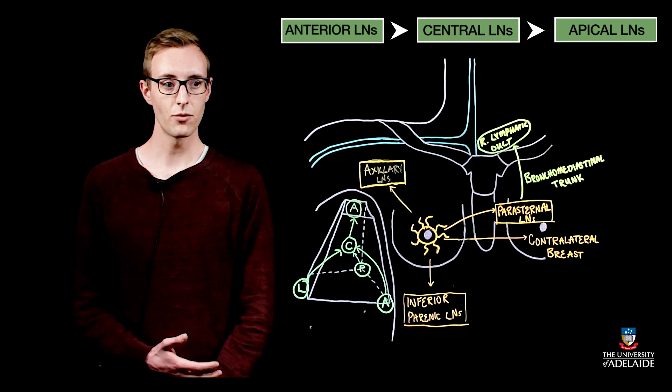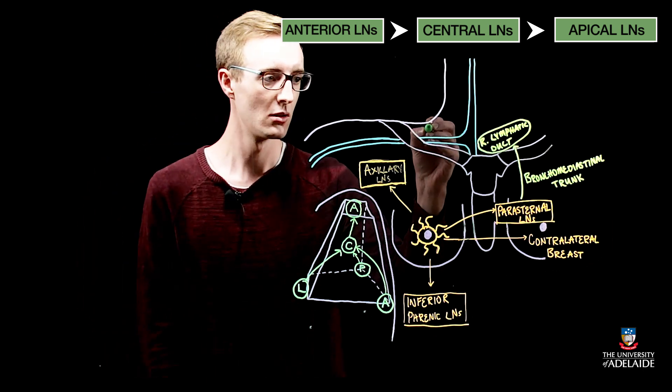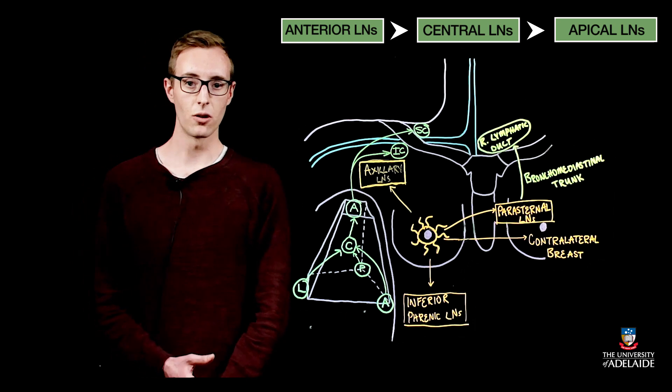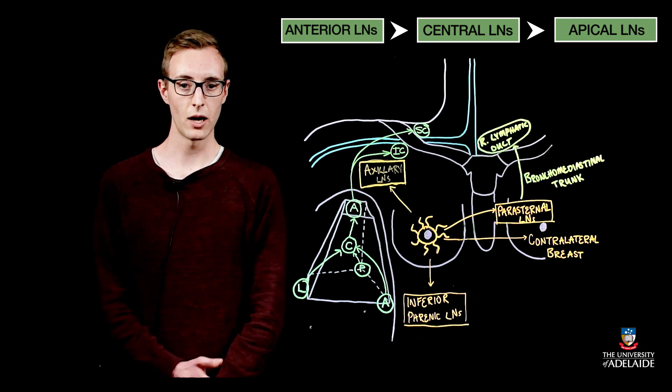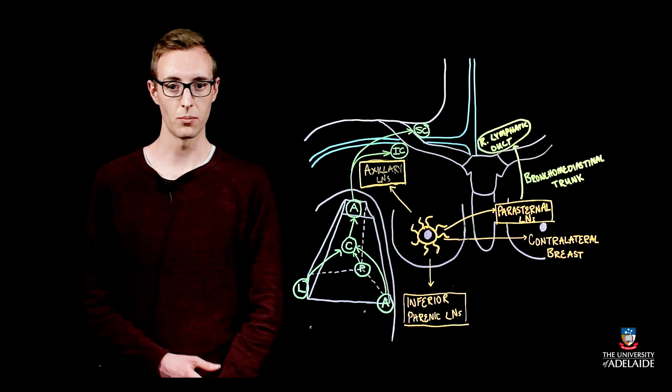From the apical lymph nodes, lymph drains towards the supraclavicular and infraclavicular nodes. From these nodes the lymph will eventually drain into the right lymphatic duct on the right side of the body or the thoracic duct on the left side of the body.